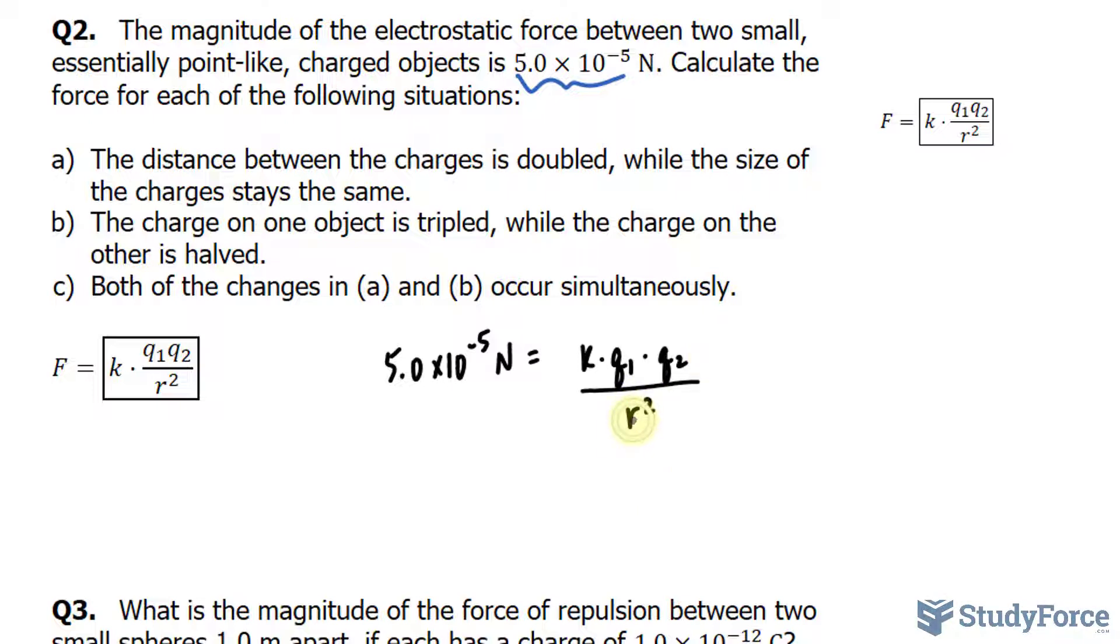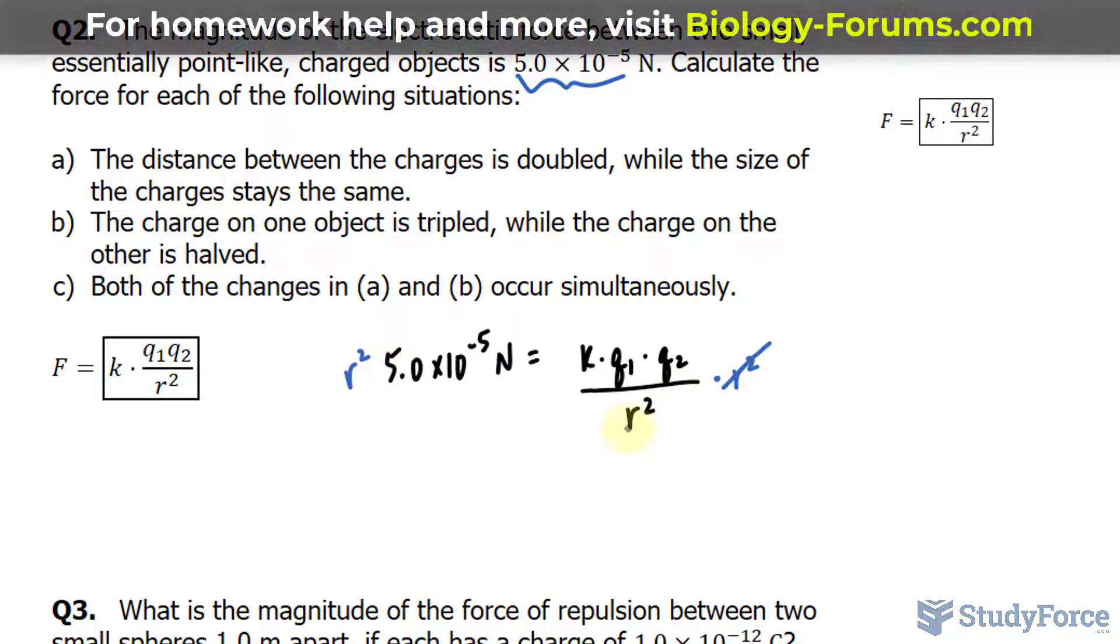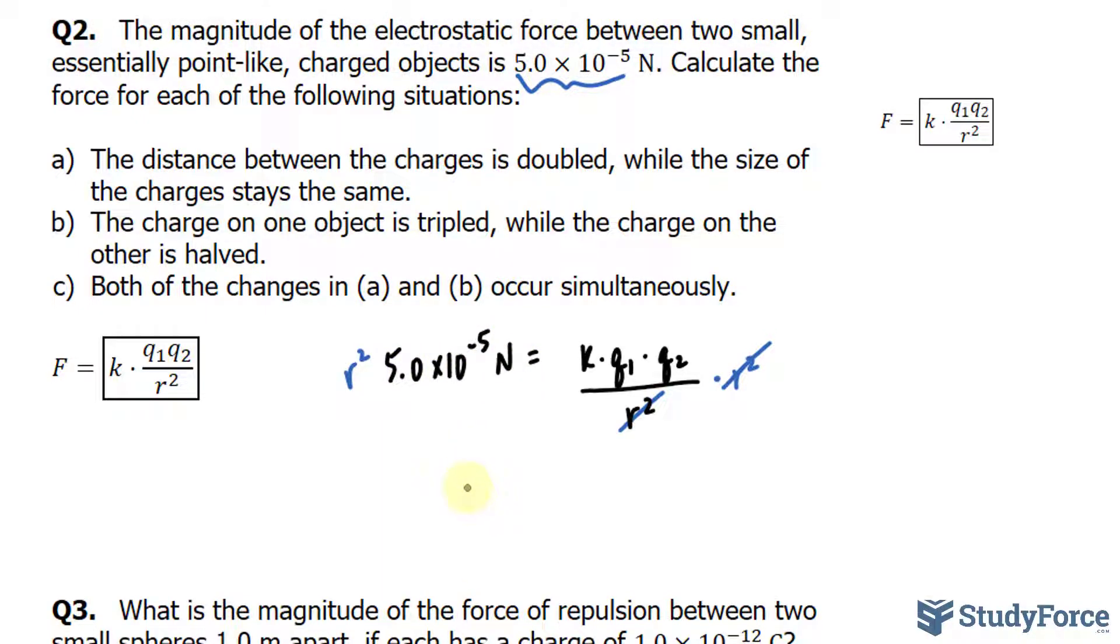Next I'm going to solve for r. So to do that, I will multiply both sides by r squared. This cancels out with that, leaving us with the following expression on the left side. And then I'll divide both sides by 5.0 times 10 to the power of negative 5 newtons. That way I have r squared is equal to k times q1 times q2 over 5.0 times 10 to the power of negative 5 newtons.